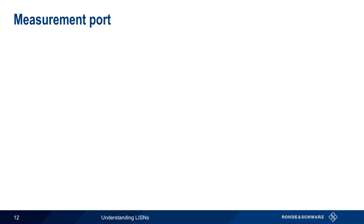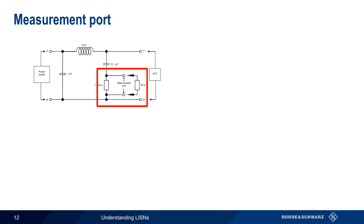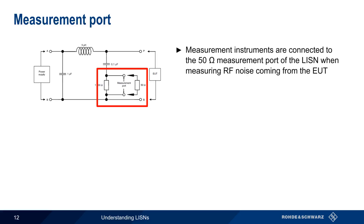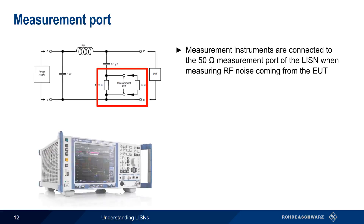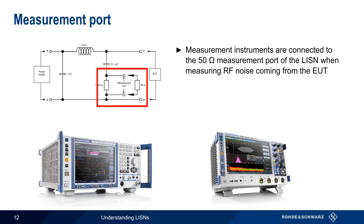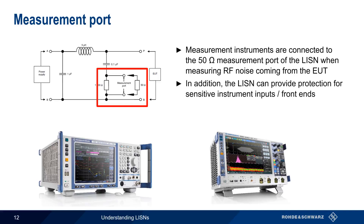The third primary function of a LISN is the measurement port. This 50 ohm port is used to connect a LISN to a measurement instrument, such as an EMI receiver or an oscilloscope, in order to measure conducted RF signals produced by the EUT. In addition to this measurement function, the LISN can also provide various types of protection to the sensitive inputs or front ends of measuring instruments.